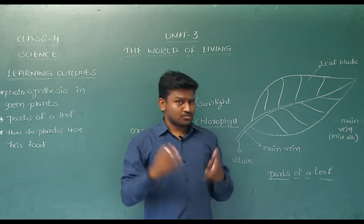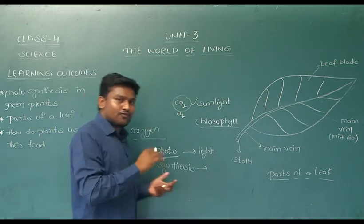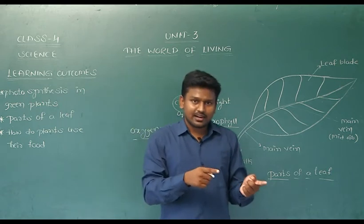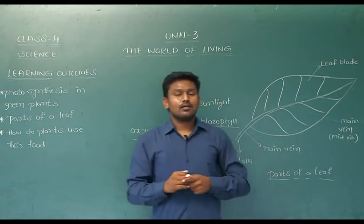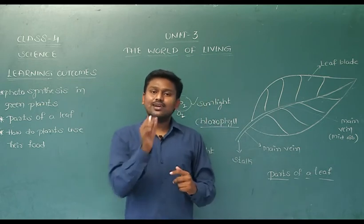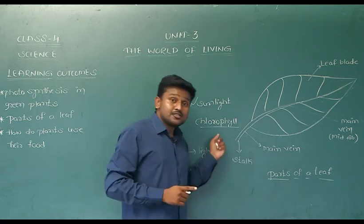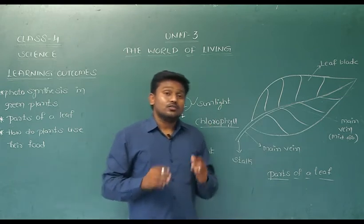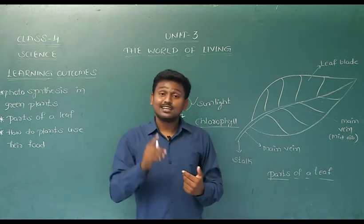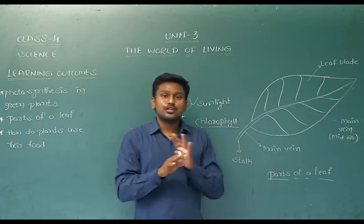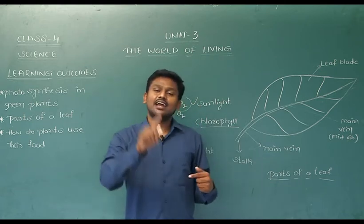You may have a doubt: I have seen so many leaves which are not in green color, what about them? Some leaves of the plants may be in different colors like red, yellow, or combinations of green and red, or green and yellow. Remember that in the plant, especially in the leaves, where the green color is present, there chlorophyll is present. And to produce food, the presence of chlorophyll is a must. If any part of the leaf has no chlorophyll, in such a case, the leaf cannot produce food in that place.